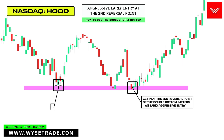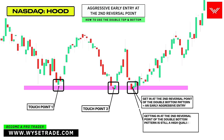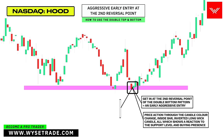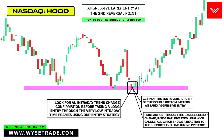You already had one touch point here and a second touch point here, which means getting in at the second reversal point is still a high quality long trade setup. You still need price action, which you had through the candle color change, inside bar, and inverted long wick candle — all of which shows a reaction to the level and buying presence. Look for an intraday trend change confirmation before taking a long entry through the very low intraday timeframes.